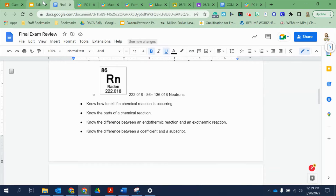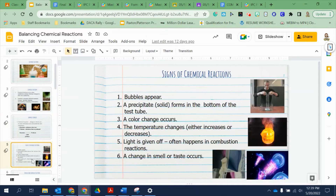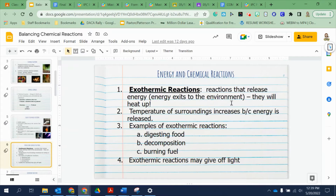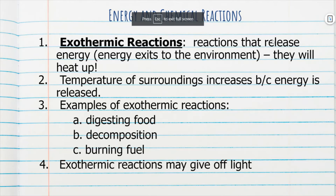Know the difference between an endothermic and exothermic reaction. An exothermic reaction means that energy is released into the environment, and that's why we see the environment heat up. That is what we saw in the calcium lab we did recently — it was exothermic because it released energy, which made the water hotter.